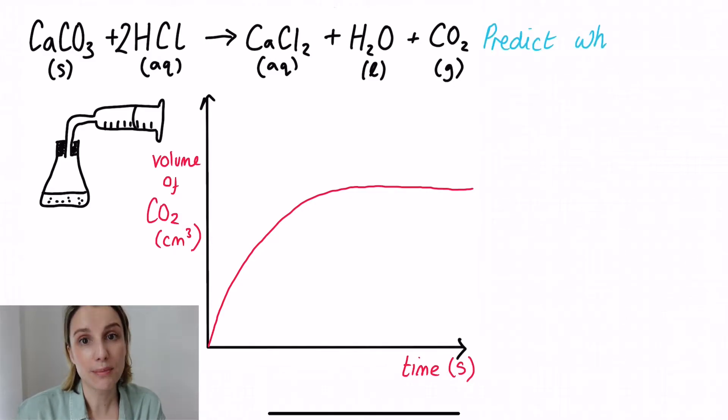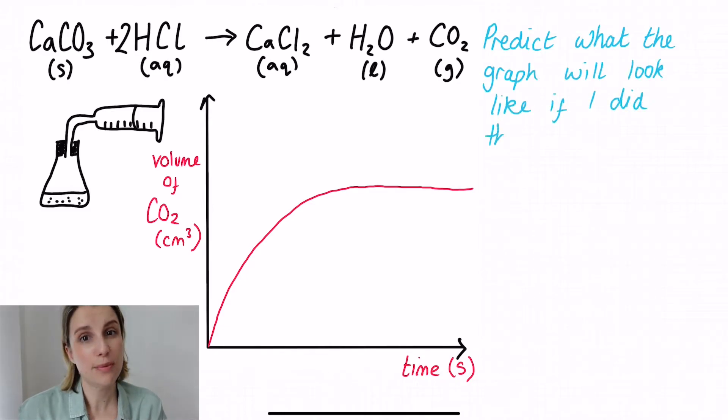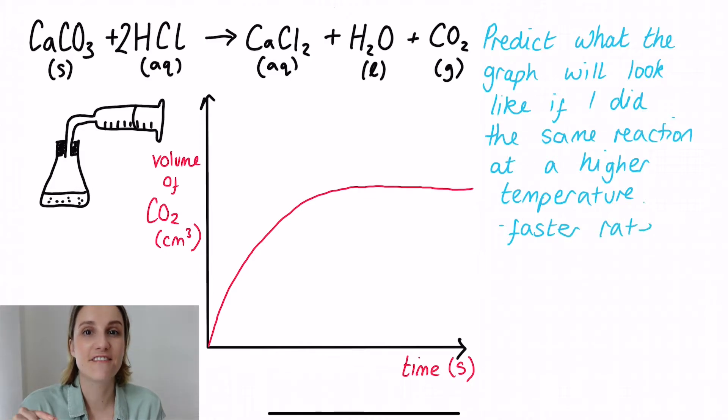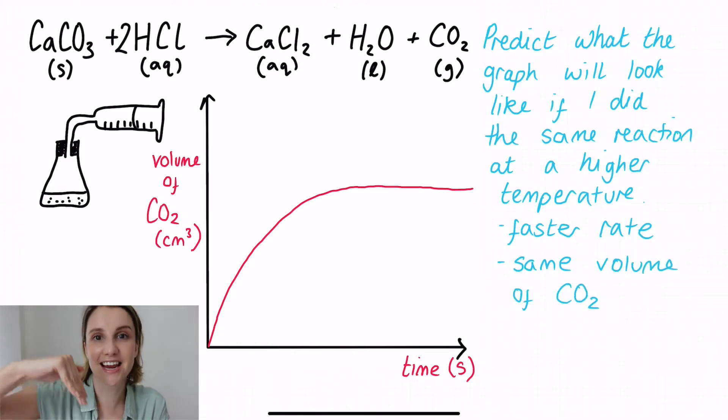The kind of questions that you might be asked with relation to this are things like, predict what the shape of this graph would look like if this reaction was done at a higher temperature. So hopefully you know that if it's a higher temperature, that means that it's a faster rate of reaction. So the way that we show a faster rate of reaction is that we're going to need the line to be steeper at the beginning.